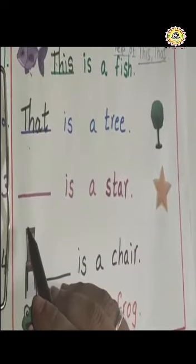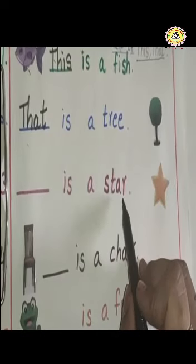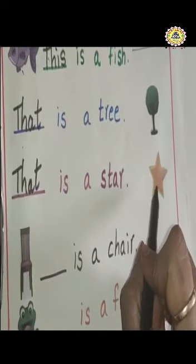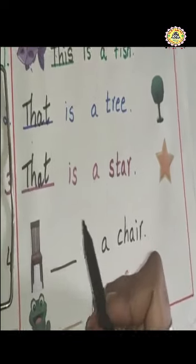Next one. Dash is a star. Observe this star, children — it is also far. So here, what we have to write? Very good. T-H-A-T, that. That is a star.